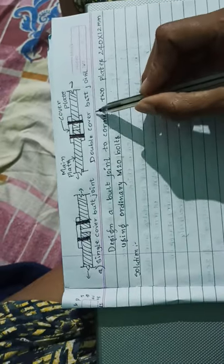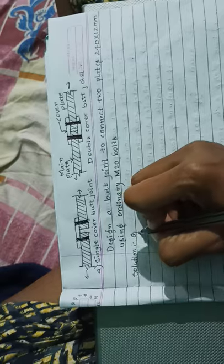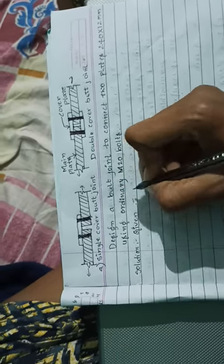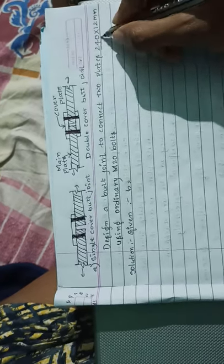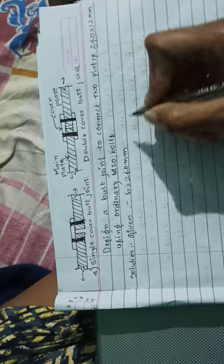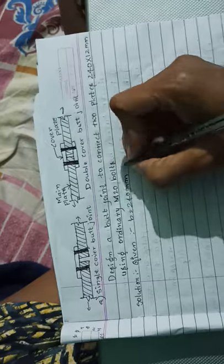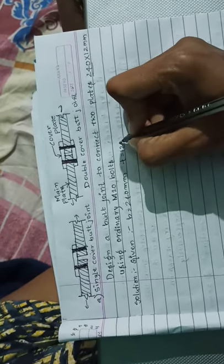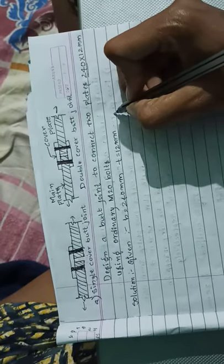Let's provide a double cover butt joint. First, write the given data: breadth is 240 mm, thickness is 12 mm, diameter is 20 mm.